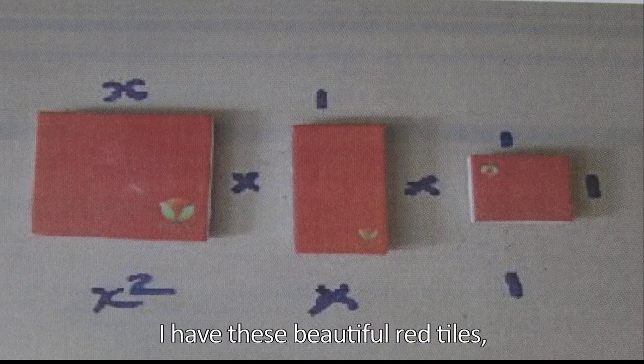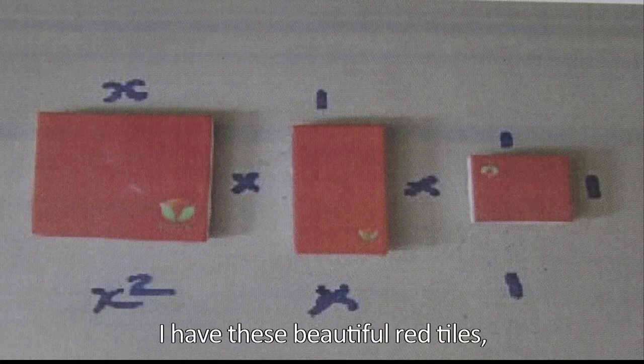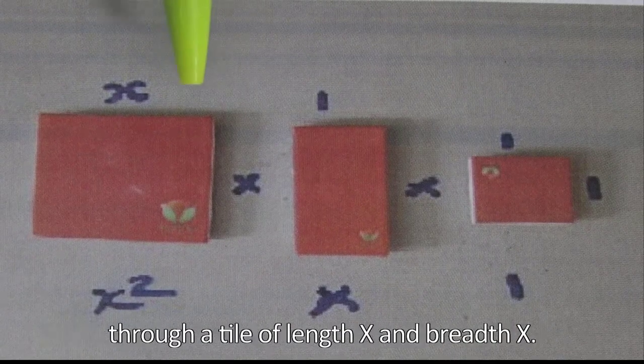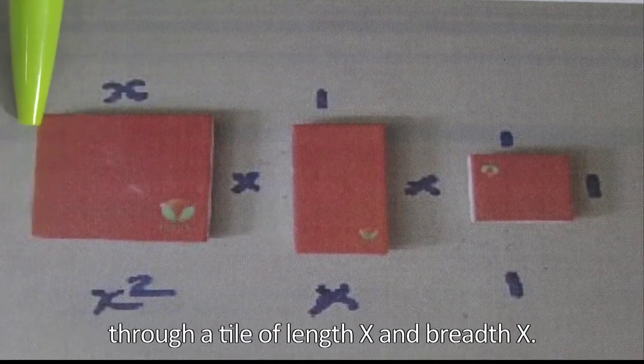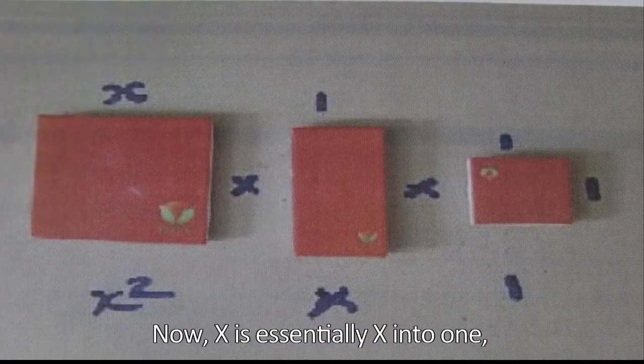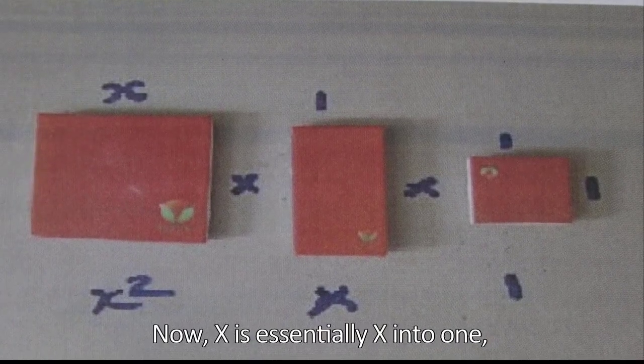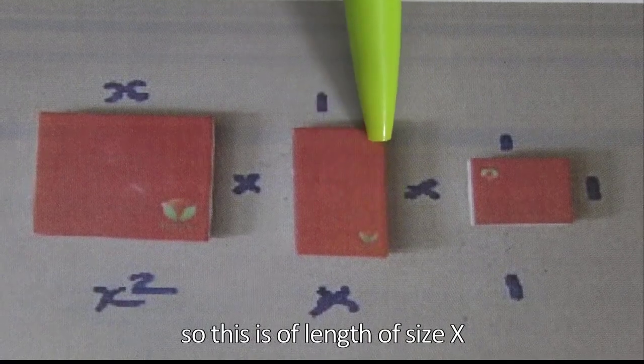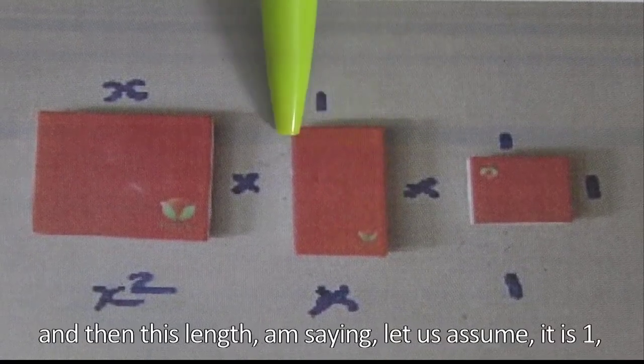So as you can see here, we have these beautiful red tiles. Now what I am doing is I am representing x square through a tile of length x and breadth x. So this represents x square. Now x is essentially x into 1, so this is of size length x.